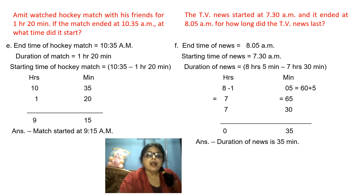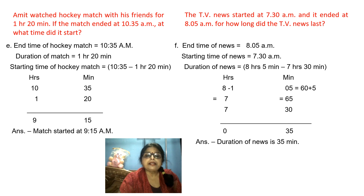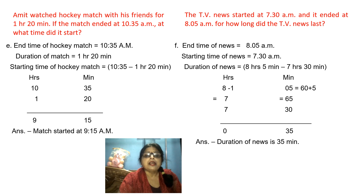Continuing to the next question: Amit watched a hockey match for 1 hour 20 minutes. If the match ended at 10:35 a.m., at what time did it start? First, find out the starting time. You subtract 1 hour 20 minutes from 10:35 a.m., then you will get the answer. Subtract it: ending time of hockey match minus duration of match — 1 hour 20 minutes. Here, you are getting the answer 9 hours 15 minutes. So you write: match started at 9:15 a.m.